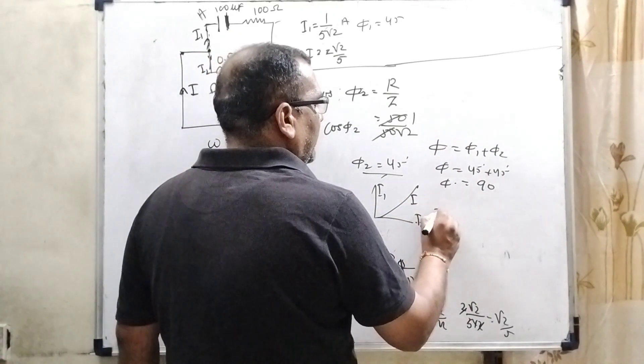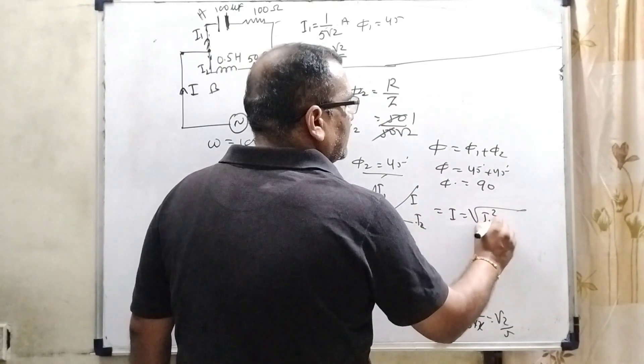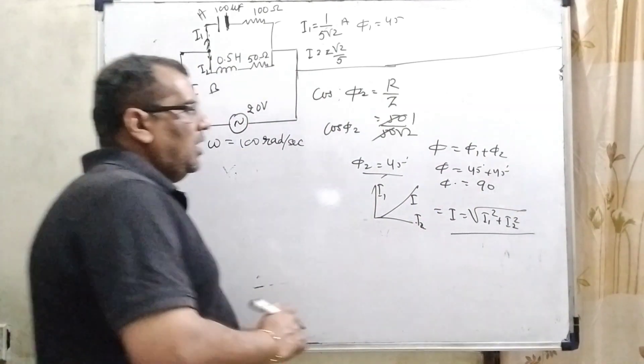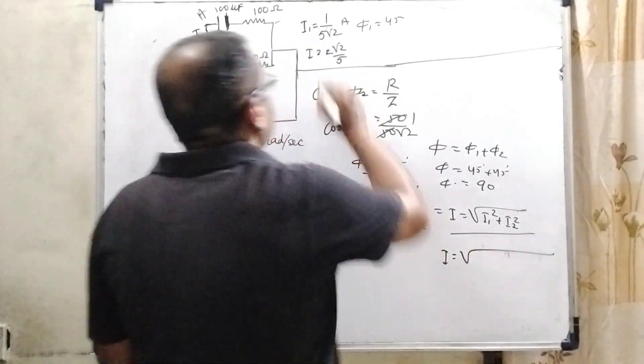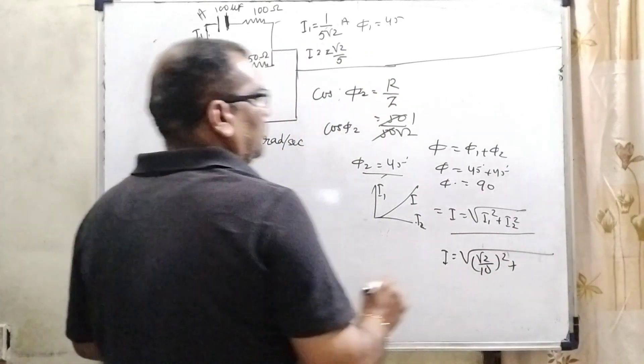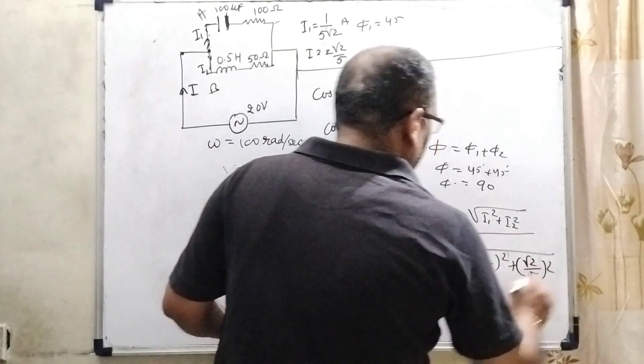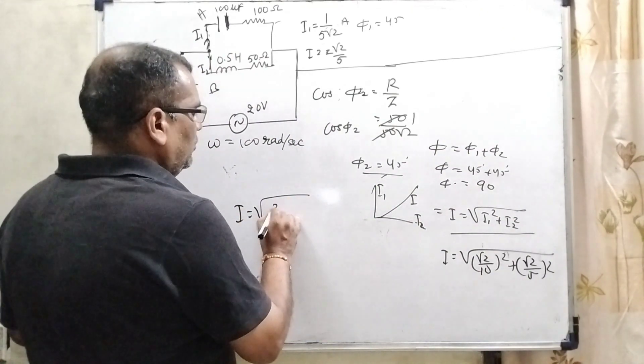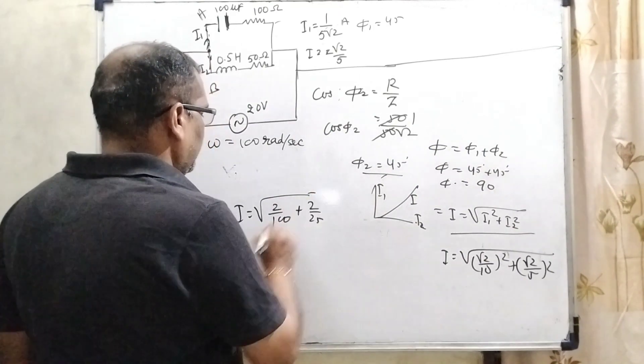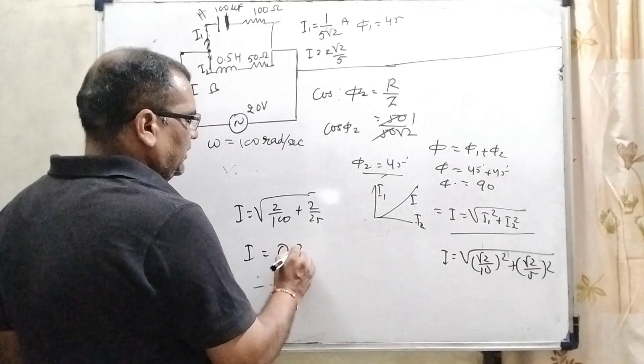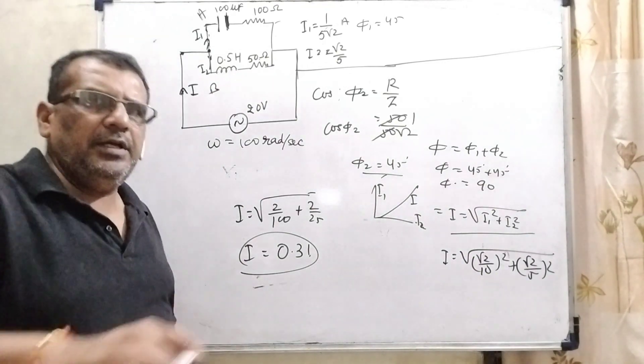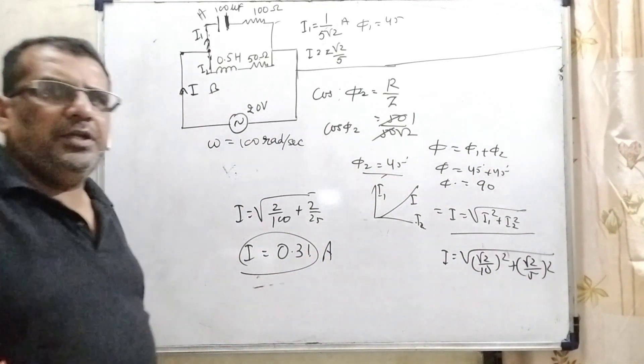It means here the current I1 and I2, the phase difference is 90 degree. So resultant I can be found as I equal to root of I1 square plus I2 square. So now substitute this value, I equal to rationalizing the terms root 2 by 10 plus root 2 by 5. Then what is the value, that is 2 by 100 and here 2 by 25, solving this value will get 0.31 something.